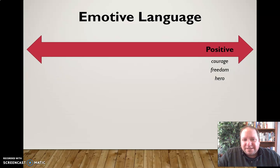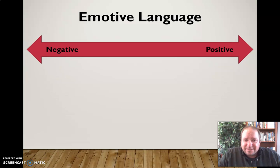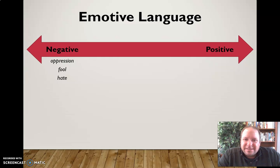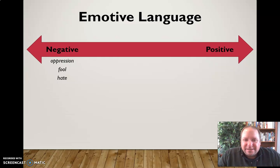We also have words that have a negative connotation attached to them — fair or not. Things like oppression, fool, and hate are words that carry a negative connotation. When you hear them, you just get a negative feeling. We don't like oppression. When somebody calls somebody else a fool, it's a negative thing. Nobody likes to be called a fool. And hate has a strongly connotative meaning attached to it. So language can have this negative connotation — it goes on both ends of the spectrum.